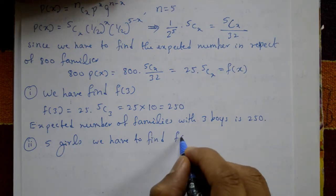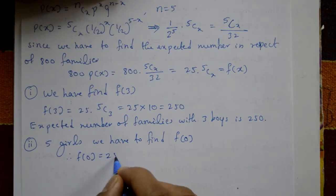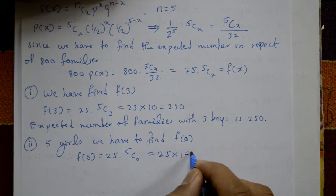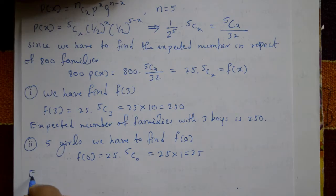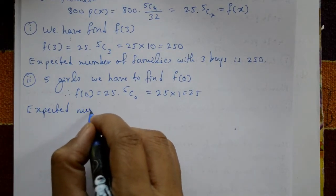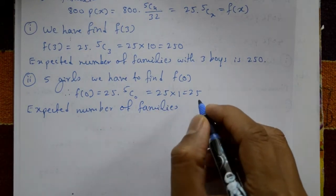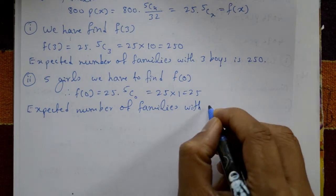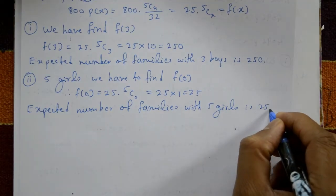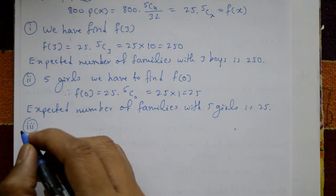Case 2: five girls means no boys, so x = 0. Therefore f(0) = 25 × 5C0 = 25 × 1 = 25. The expected number of families with five girls is 25.